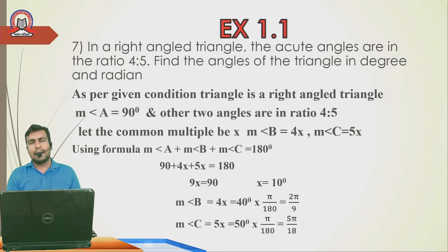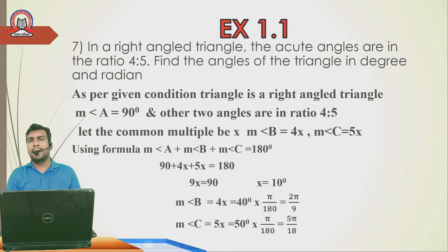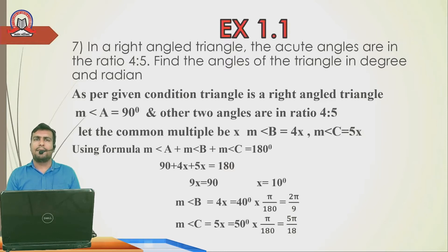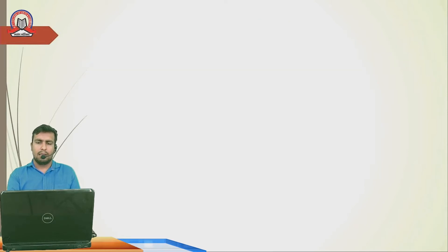Angle C = 5x = 5 × 10 = 50°. Converting to radian: 50 × π/180 — zeros cancel, leaving 5 and 18 with no common factor, so Angle C = 5π/18 radian.